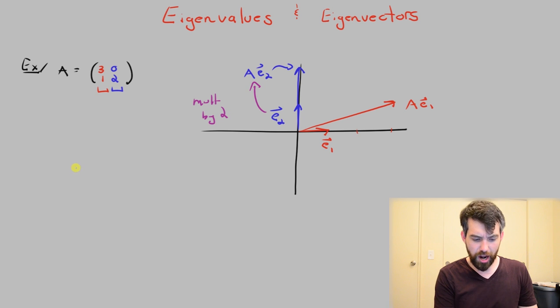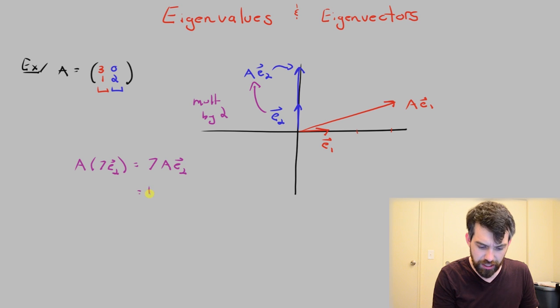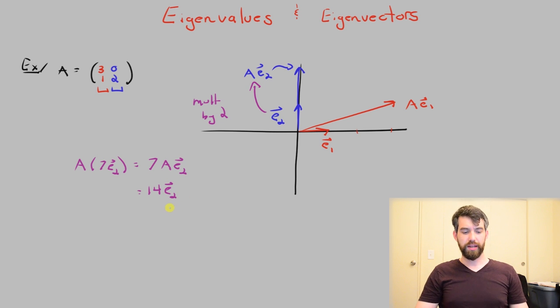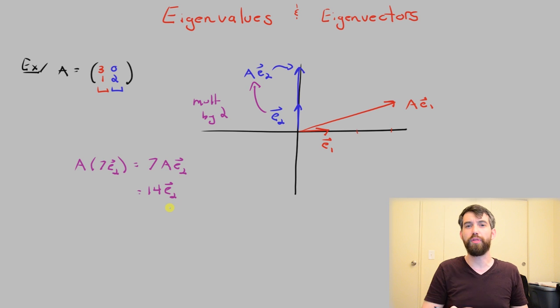Indeed, if I thought about what the matrix A did to, say, 7E₂, because it's a linear transformation, it would just go to 7 times whatever the matrix does to E₂. But then, since A just takes that E₂ and multiplies it by 2, it's just a stretching, then what this really is is just 14 times E₂. So in other words, this matrix A is just taking any scalar multiple of E₂ to some other scalar multiple of E₂. It's a multiplication by 2, at least if I'm along the y-axis.